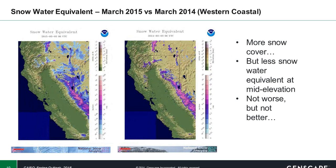Here we're looking at Northern California, and this has a bit more similarity to last year. You can even see that there's actually broader coverage of snow cover this year versus last year. The difference is that we do see lower snow water equivalent values at the mid-elevation, so it's not necessarily any worse than last year, but it's also not markedly better.